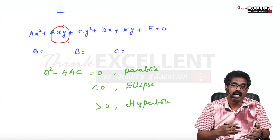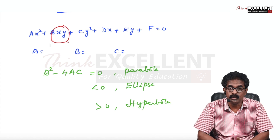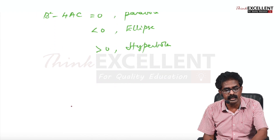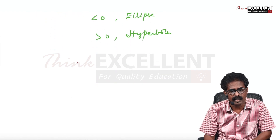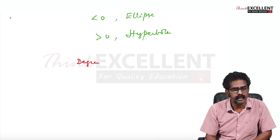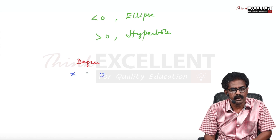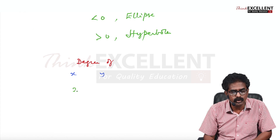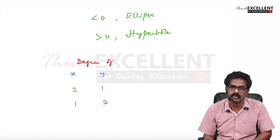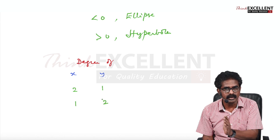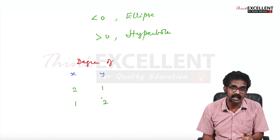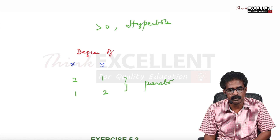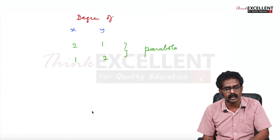While teaching parabola, ellipse, hyperbola, I taught how to identify them. So I am just compiling now. Using the degree, you can say what type of conic it is. Just try to understand the degree of X and Y. Suppose the degree of X is 2 and Y is 1, or X degree 1 and Y degree 2 — that is, X² is there but only Y is there (not Y²), or Y² is there but only X term — then you know this represents a parabola.